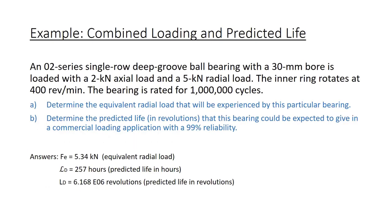We have an O2 series single row deep groove ball bearing with a 30 millimeter bore that is loaded with a 2 kilonewton axial load and a 5 kilonewton radial load. The inner ring rotates at 400 RPM, and the bearing is rated for 1 million cycles. The first thing we want to determine is the equivalent radial load that will be experienced by this particular bearing, the FE. Then we also want to determine the predicted life in revolutions that this bearing could be expected to give in a commercial loading application with a 99% reliability. Here are the answers just for reference, but I'm going to show you what this looks like in my analysis tool.